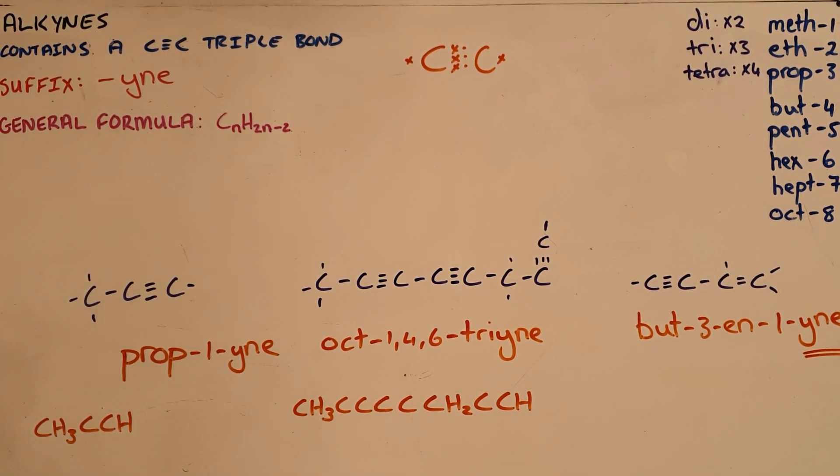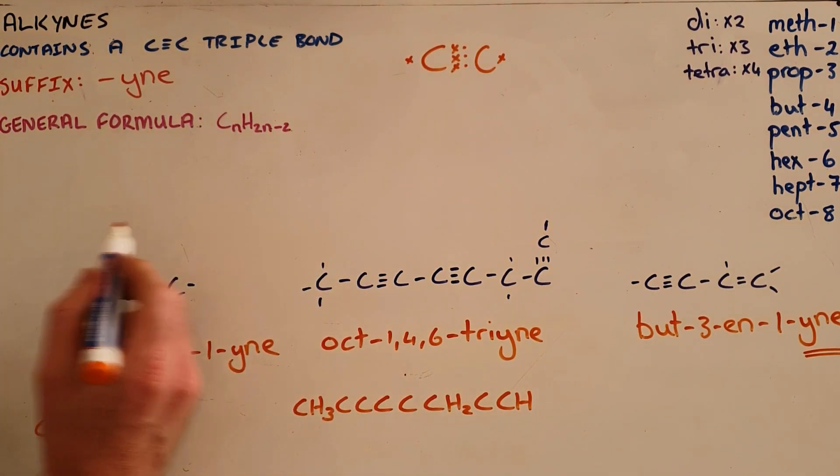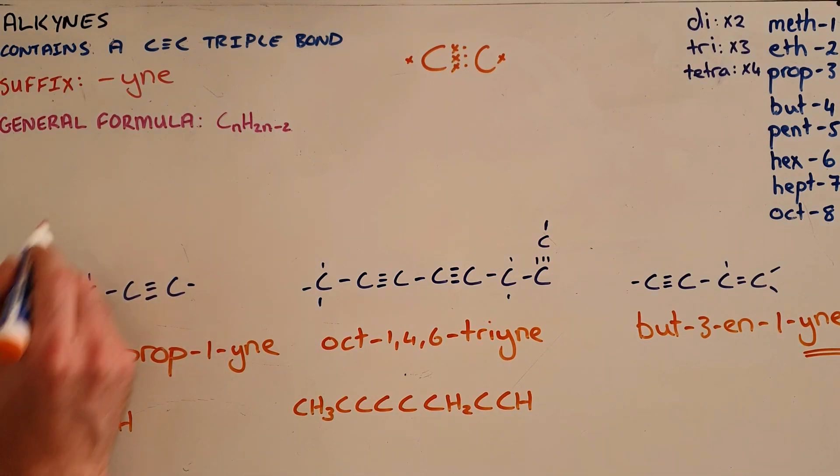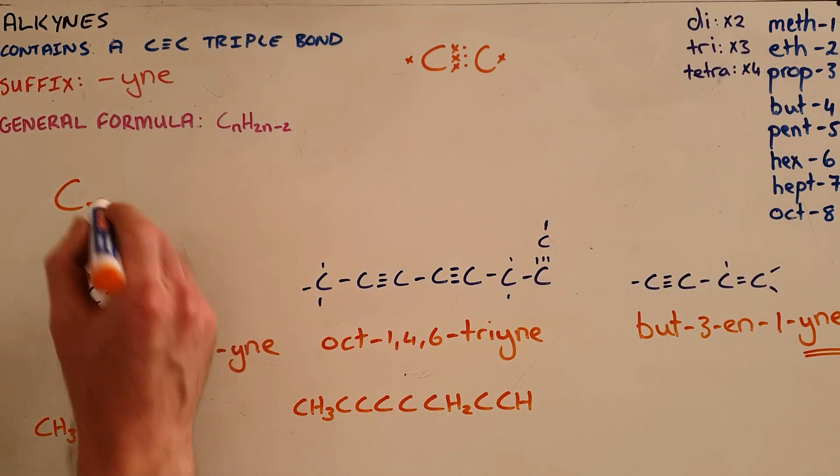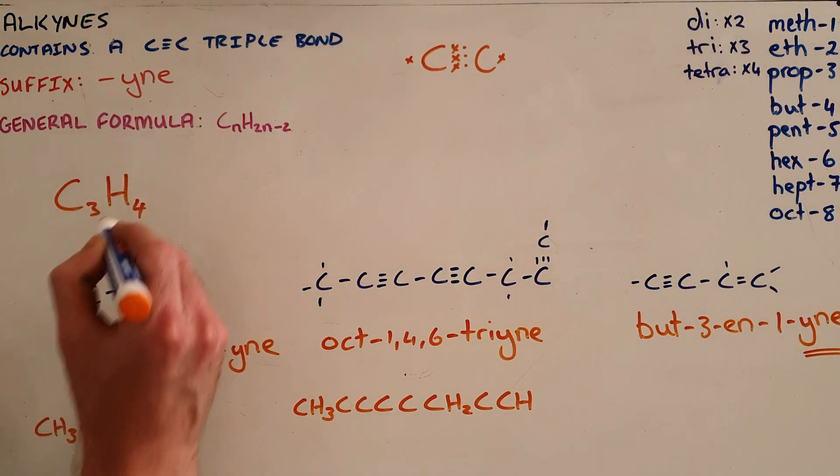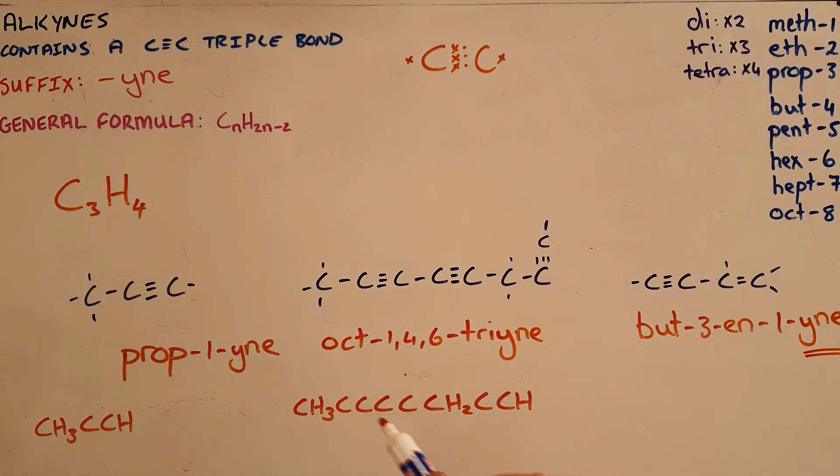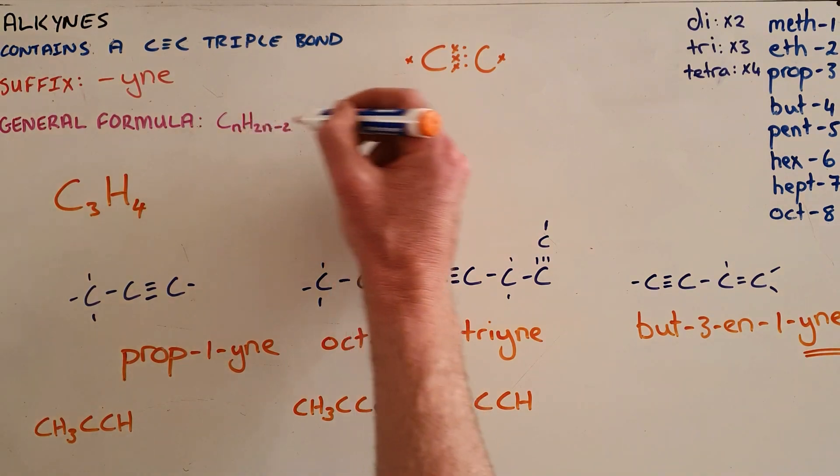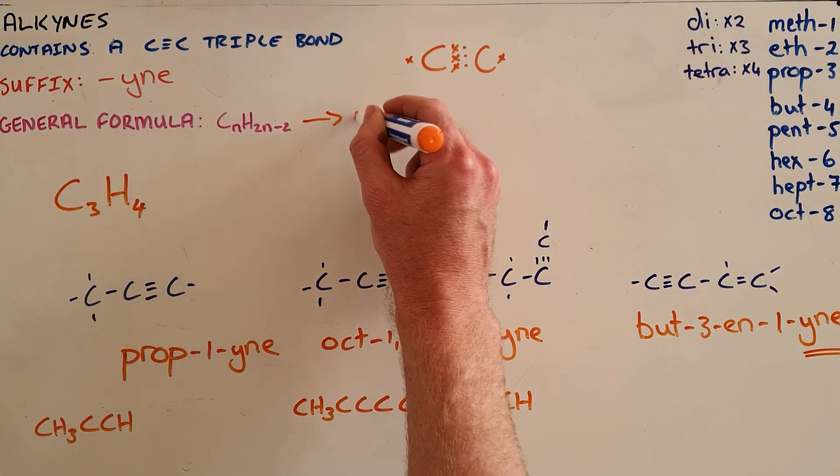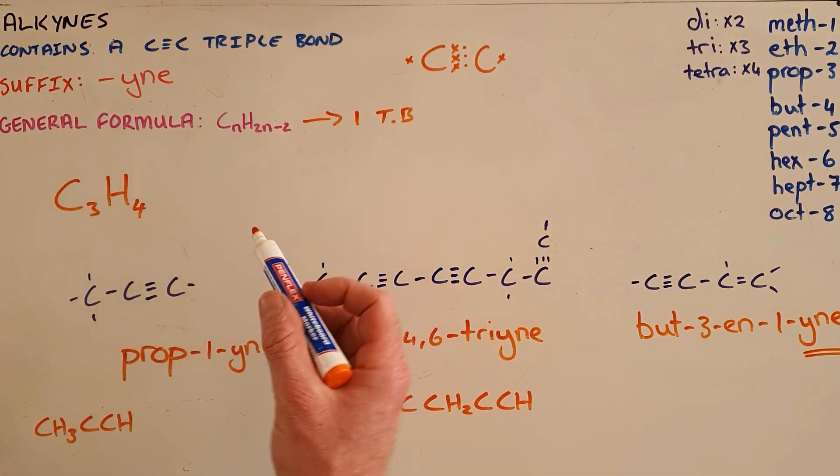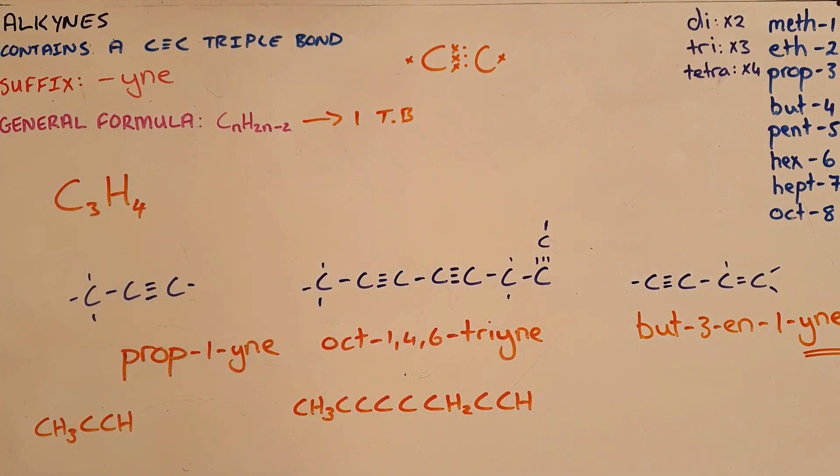We can then see that each of these alkynes subscribes to the general formula CnH2n-2 by looking at prop-1-yne, seeing that it contains three carbons and four hydrogens: C3H4. And this molecule over here would not necessarily subscribe to this formula because this formula applies when there is only one triple bond, and here there are three triple bonds. So this general formula only applies in cases where there is one triple bond present.